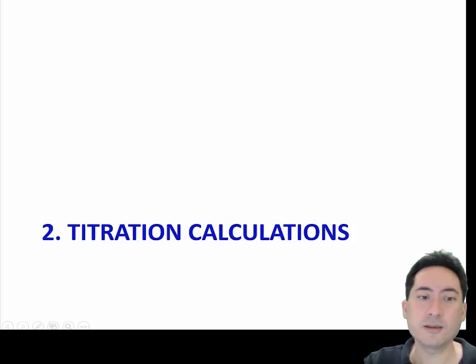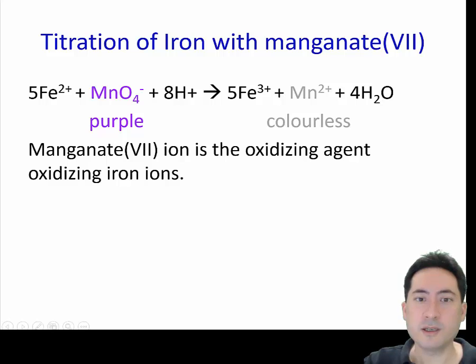Moving on to titration calculations. Titration calculations work by having some chemical that changes color when you have a change in oxidation state, usually with changing pH. Here we have permanganate ion that's purple, and it reacts with acid and becomes colorless.